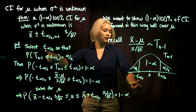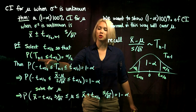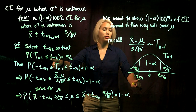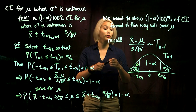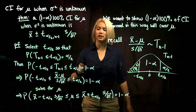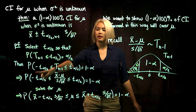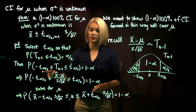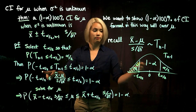So we've gone out and selected these t quantiles. We selected it so that the probability that a t distribution with n minus 1 degrees of freedom is less than or equal to negative t alpha over 2 is alpha over 2. We specially selected those t alpha over 2 so that we get this probability. So then we know that the probability that a t distribution with n minus 1 degrees of freedom is between negative t alpha over 2 and positive t alpha over 2 is 1 minus alpha. That's how we set it up.